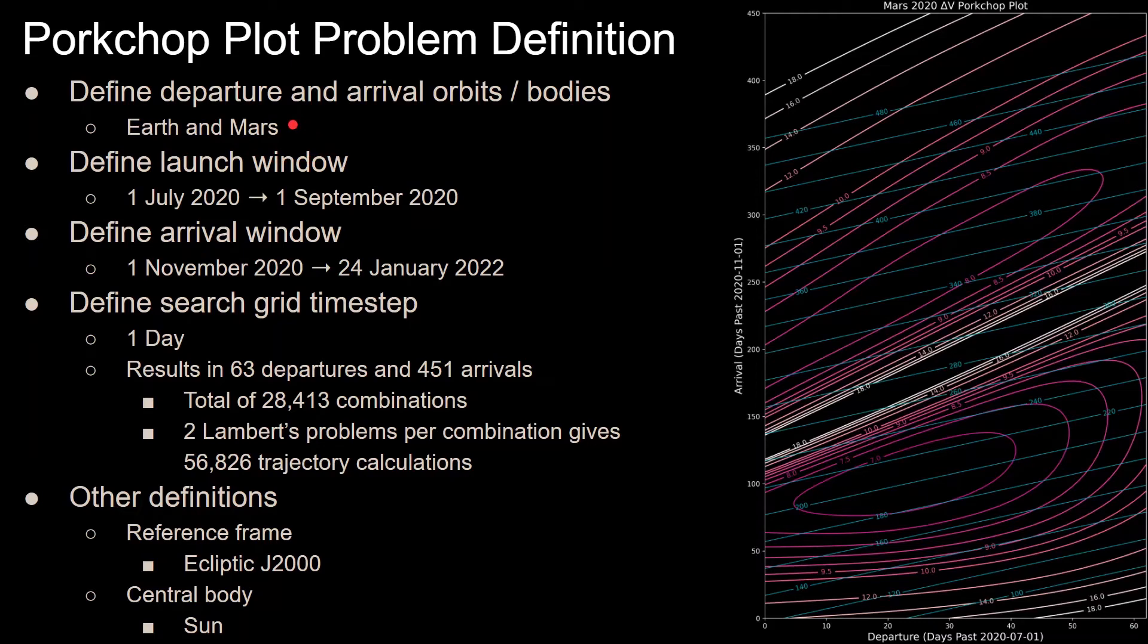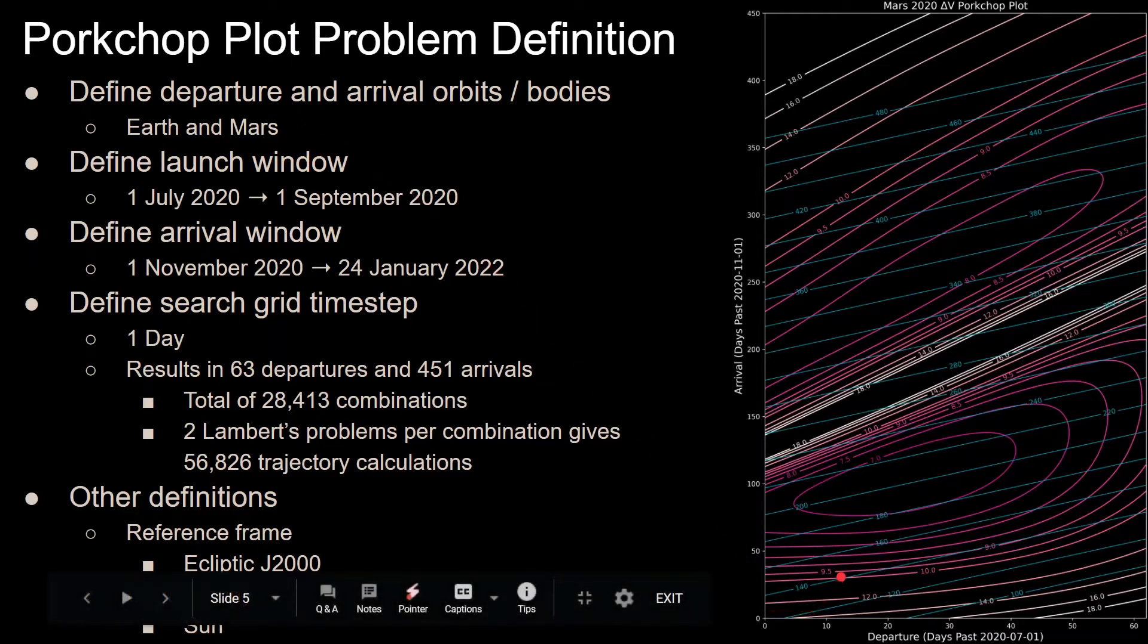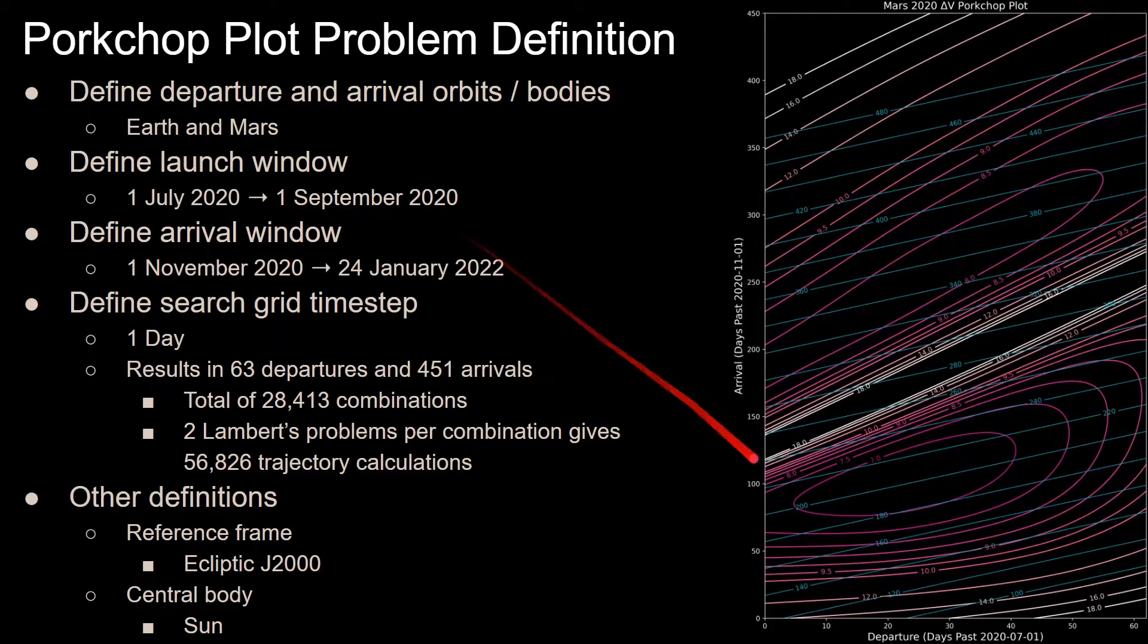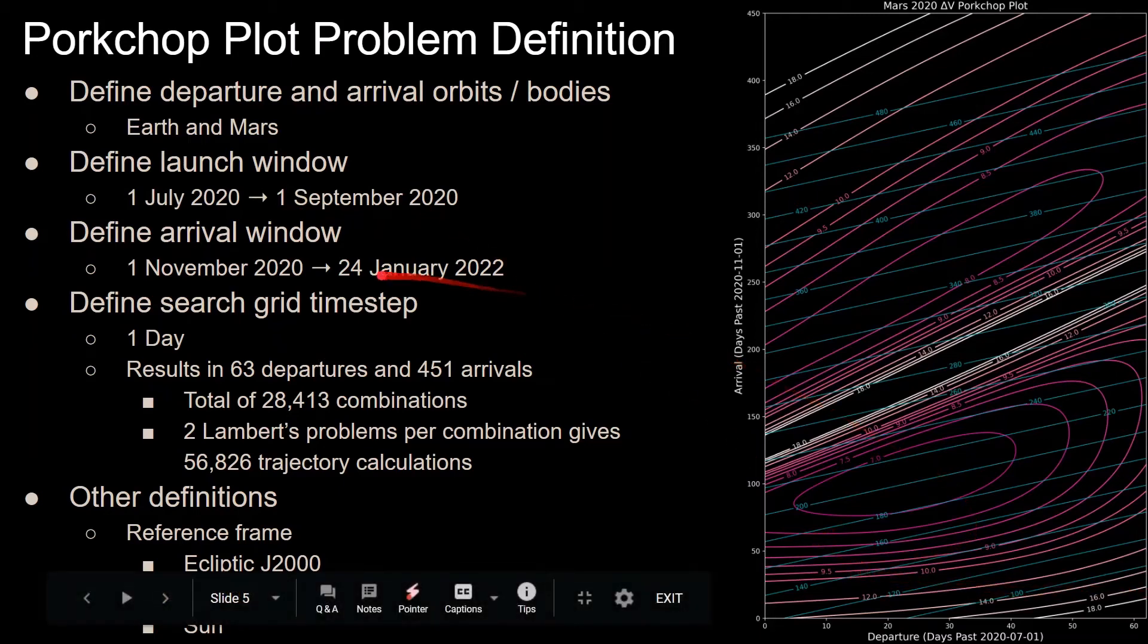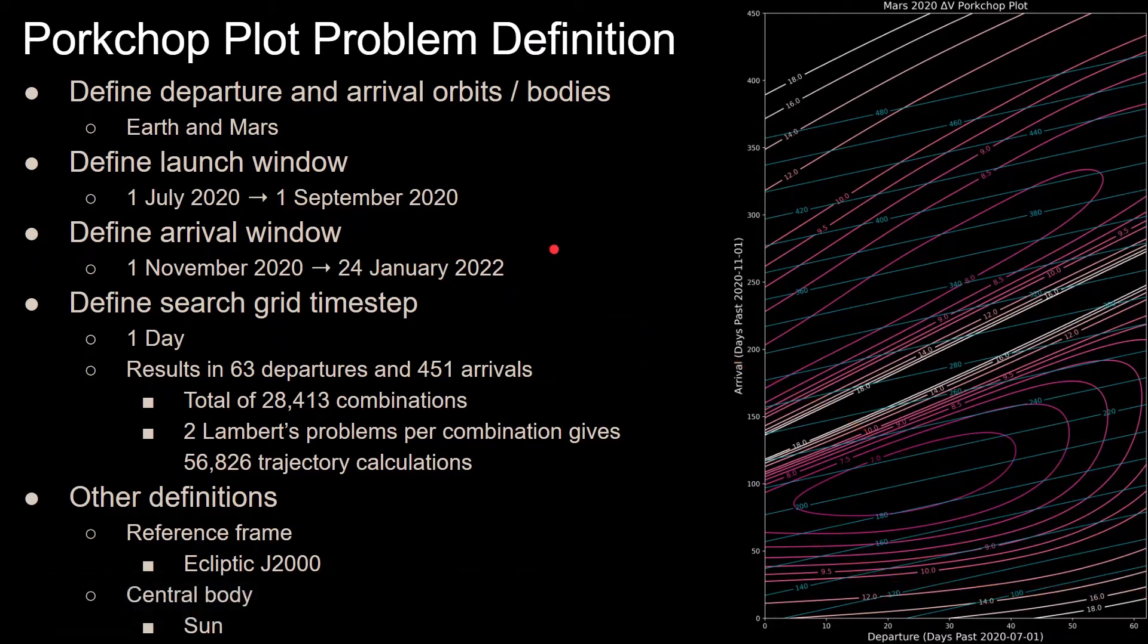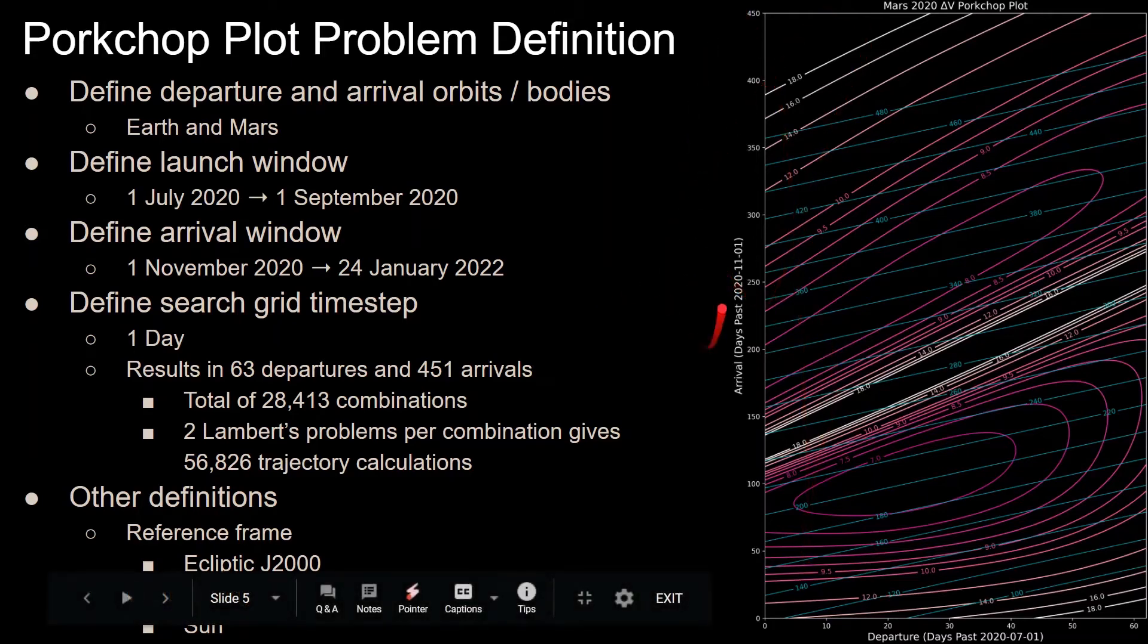Then you want to define a launch window. In this case, we are considering launching from 1 July 2020 to 1 September 2020, which is the x-axis of this plot. We want to define an arrival window, where we want to arrive between 1 November 2020 and 24 January 2022, which is the y-axis in this plot.